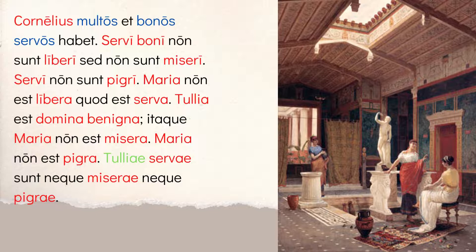Servi boni non sunt liberi, sed non sunt miseri. The good slaves — notice boni is matching servi in case, number, gender — are not free but not miserable. Notice the long I endings all matching servi. It's pluralizing the previous sentence. Then: servi non sunt pigri — the slaves are not lazy. Then we have Maria: Maria non est libera, quod est serva. Maria is not free because she is a slave woman. The word libera uses an A ending to describe Maria because she's feminine, as opposed to liberi which described the male slaves.